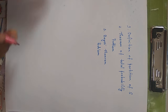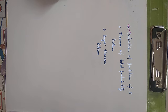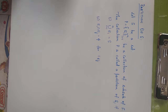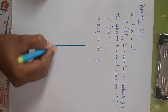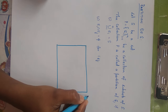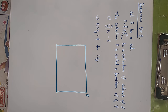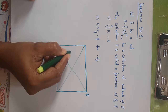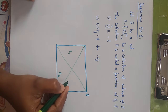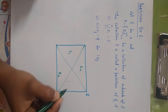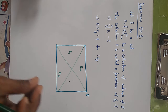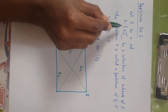Let us begin the class with the definition of partition of S. Let us consider a set S. Since we are studying probability, that set S can be taken as the sample space. Let this rectangle represent the sample space S. We will partition this sample space S into a number of subsets or sub-events. Let this be event E1, this be event E2, and so on up to En. Depending on n, we split this sample space into a number of sub-collections.